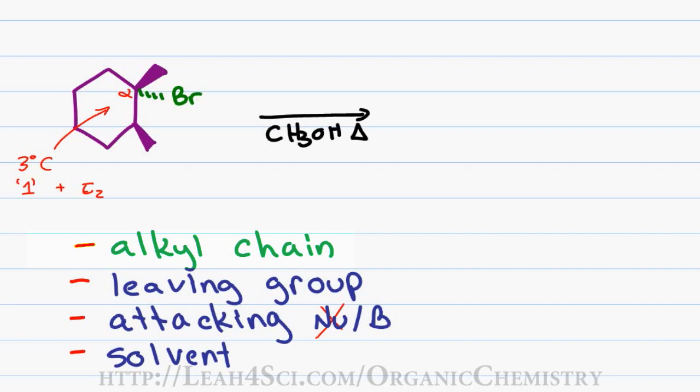For elimination reactions, you also want to analyze the beta carbons to ensure that you have beta hydrogens to eliminate. On this molecule, we have 3 beta carbons, each of which have beta hydrogens, meaning elimination can take place.